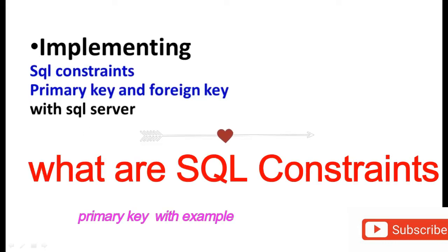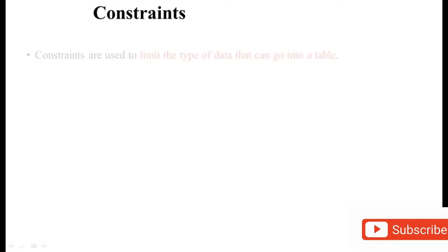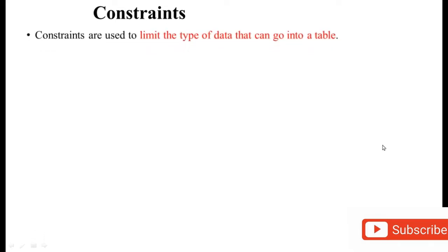Hi, salam. Today we will look at implementing SQL constraints — primary key and foreign key — by using SQL Server. What is a constraint? Constraints are used to limit the type of data that can go into a database table. By using constraints, we apply rules so that data entering the table meets required criteria.